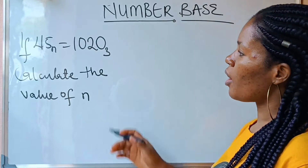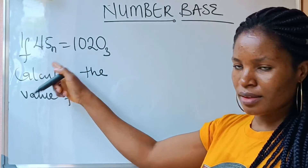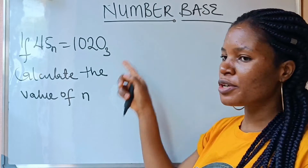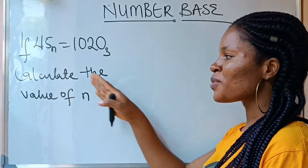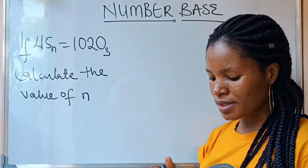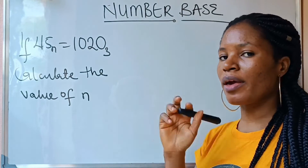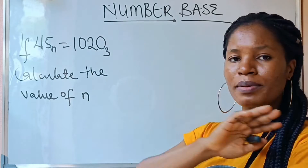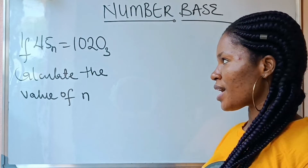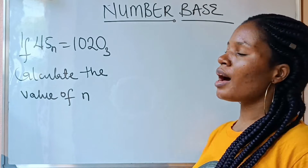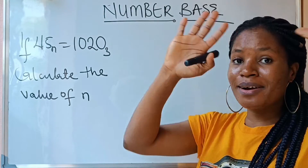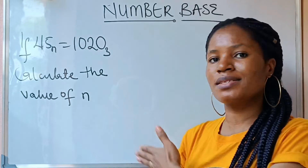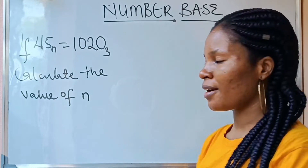Welcome to my channel. We are asked to find the value of n if 45 in base n is equal to 1020 in base 3. So how do we go about this? You need to convert both of them to base 10. Once you are able to do that, your answer will come out. The big question is: how do we convert from a given base to base 10?